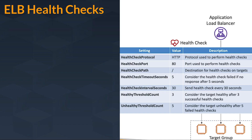Health check interval seconds — suppose it has a value of 30. When the application load balancer sends a health check to the target, that 30-second value decides the time interval between health checks. So it sets the duration: after 30 seconds only will it send another health check, meaning it sends a health check every 30 seconds.